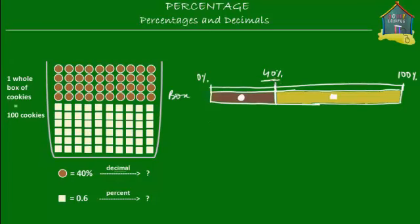Let's take 40% and express it as a fraction. What is 40% equal to in fractions? Well, 40% means 40 out of 100 — the percent means out of 100, right? So 40% is equal to the fraction 40 upon 100. Now think of a fraction as a division, because a fraction is nothing but division. So 40 upon 100 is actually equal to 40 divided by 100 — the numerator 40 divided by the denominator 100.